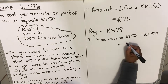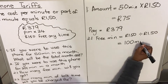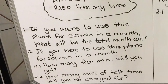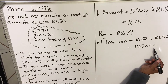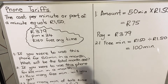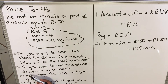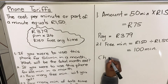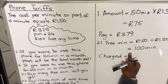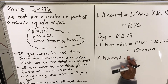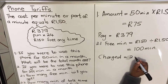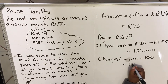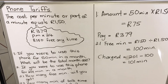You find that you get 100 minutes per month for free. The next question asks how many minutes of talk time will you be charged. You are getting 100 minutes for free, and you were talking during the month for 201 minutes. So 201 minutes minus the 100 that are free means you will be charged for 101 minutes.